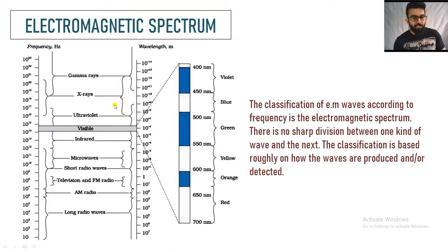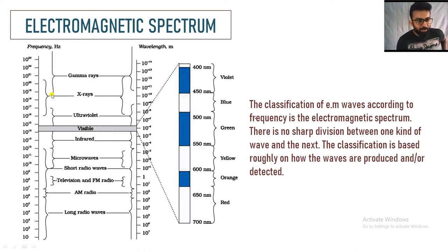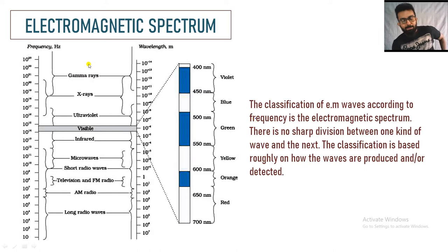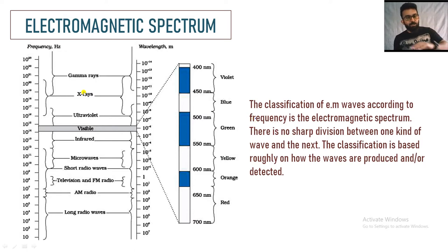Looking at the divisions we have named — gamma rays, X-rays — the differentiation between these electromagnetic waves does not have a sharp boundary or fixed boundary. The waves overlap in their regions, meaning in the rays there is no fixed boundary.